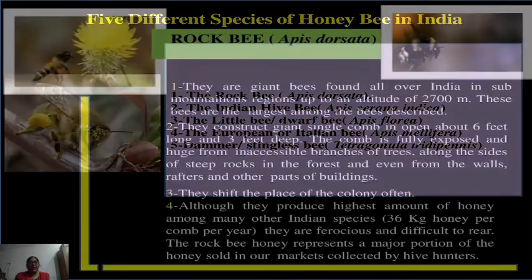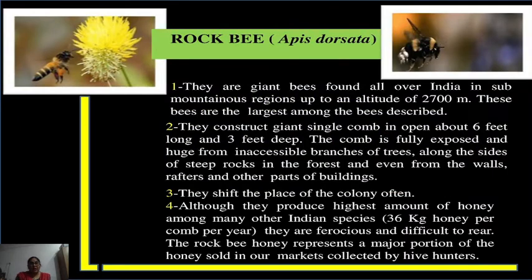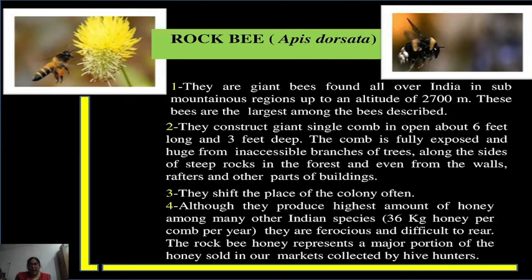The first is the rock bee. Its zoological name is Apis dorsata. It is the largest Indian variety with an average size of about 20 mm. They are giant bees found all over India in sub-mountain regions up to an altitude of 2,700 meters. These bees are the largest among the bees described. They are a migratory species — during June and July they swarm to the hills, but in winter come back to the plains.